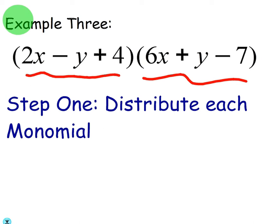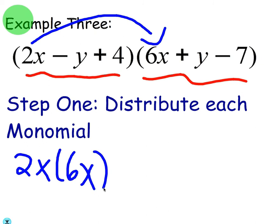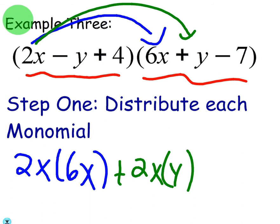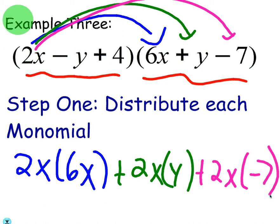What are the first two terms you're going to multiply here? Distribute. Yeah, so exactly, you're going to distribute the 2x and the 6x. So it's going to be 2x times 6x. Then we're going to distribute the 2x to the y. And then we're going to distribute the 2x to the minus 7.